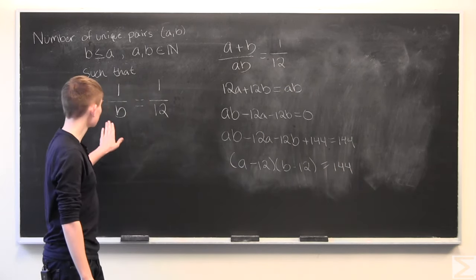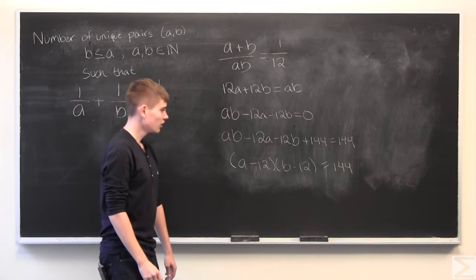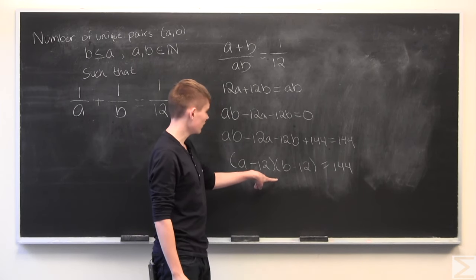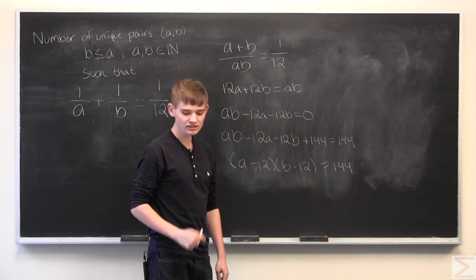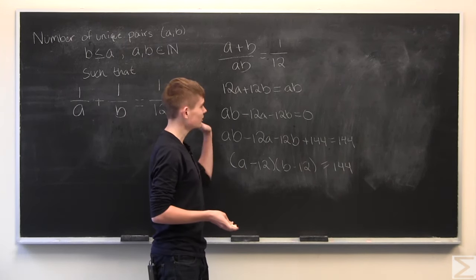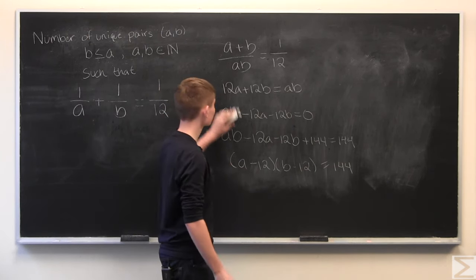So what this problem comes down to is factorizing 144 and then getting a and b from there, and if that isn't clear to you that's okay because I'm going to write out a chart which hopefully will explain things.